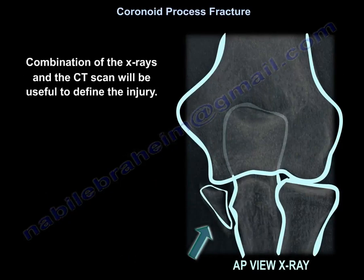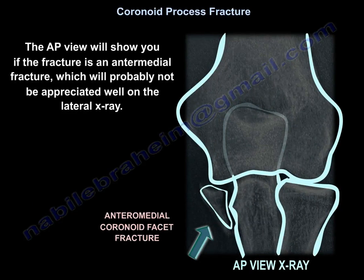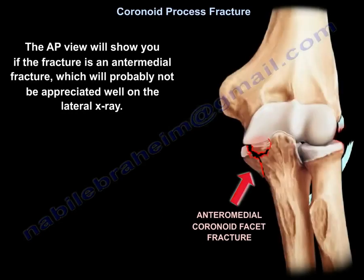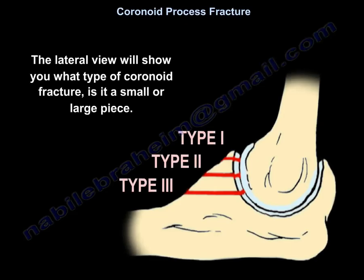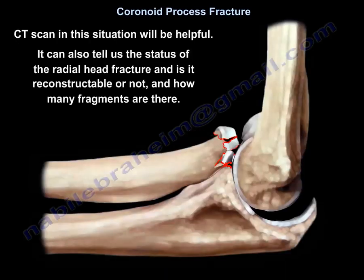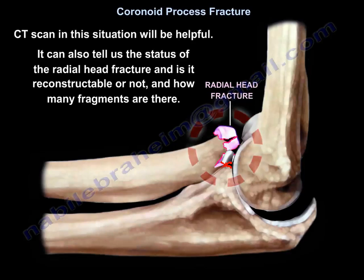Combination of X-rays and CT scan will be useful to define the injury. The AP view will show you if the fracture is an anteromedial fracture, which probably will not be appreciated well on the lateral X-ray. The lateral view will show you what type of coronoid fracture — is it a small piece or large piece? A CT scan will also tell us the status of the radial head fracture, whether it is reconstructable or not, and how many fragments there are.